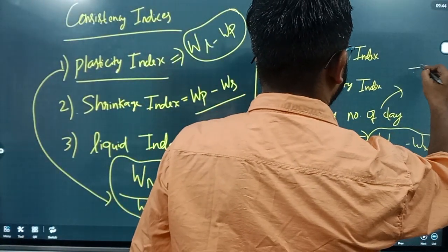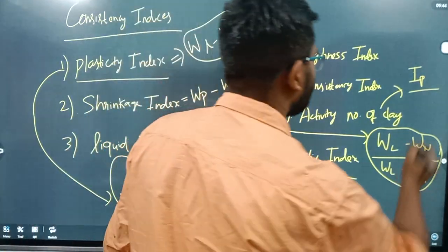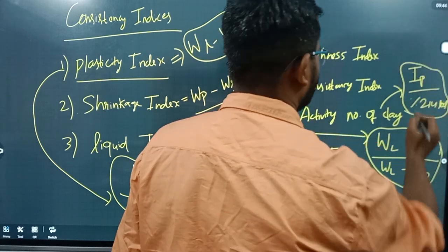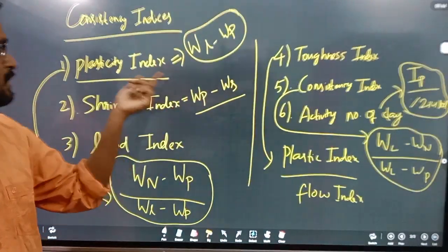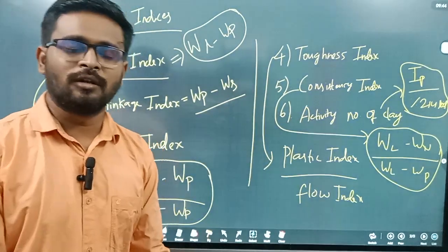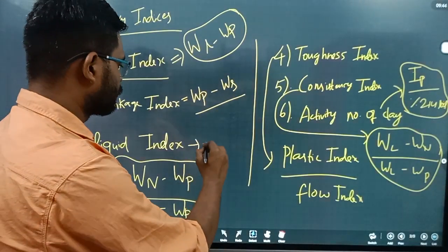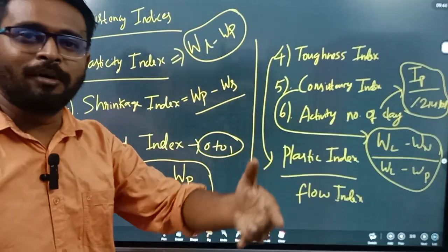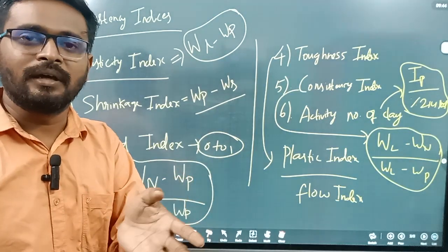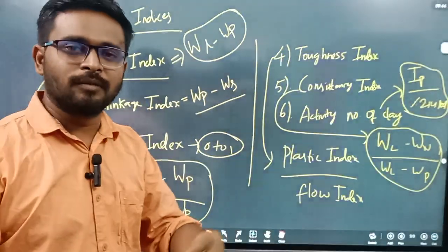The activity number: IP, that is plastic index divided by the percentage of 2 micron. So this is the formula. The plasticity index range is zero to low plastic. The medium range is 0.75 to 1.25. We will do more next time. Thank you.